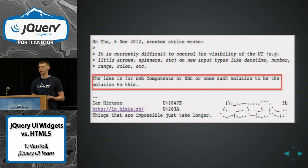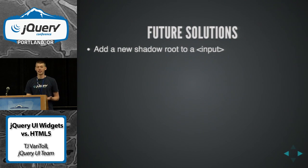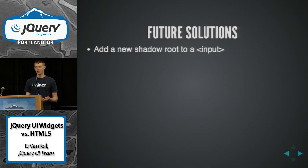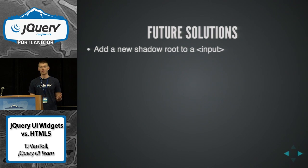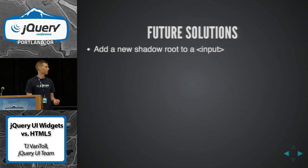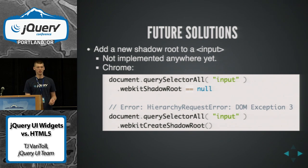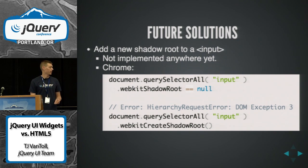What exactly does that mean? Basically, we looked earlier at the date picker and could drill into it and see the actual Shadow DOM implementation in Chrome. The idea is that in the future, you'd be able to inject your own Shadow DOM element in there, and the browser would know to use that instead of the native implementation. You'd get all the benefits of encapsulation and all the power that Shadow DOM comes with. But there's a problem — it's not implemented anywhere yet. Chrome is the only browser that has Shadow DOM support in stable release. If you try to get a reference to the shadow root of an input element, it'll tell you it's not there. If you try to create a new shadow root for that input element, it will throw an exception.